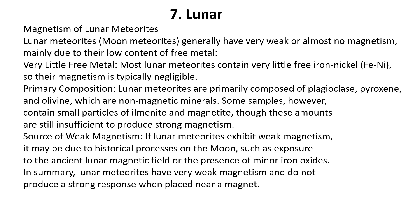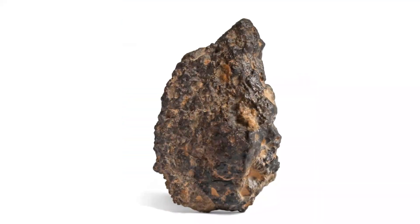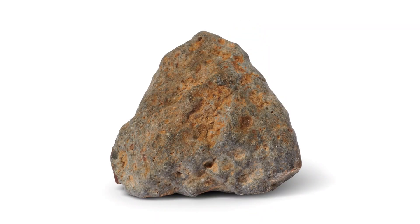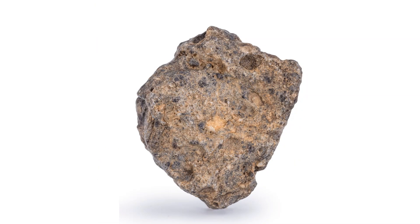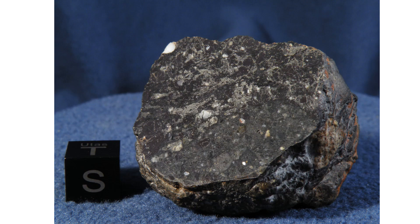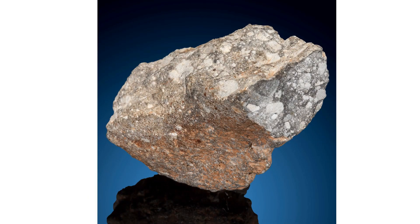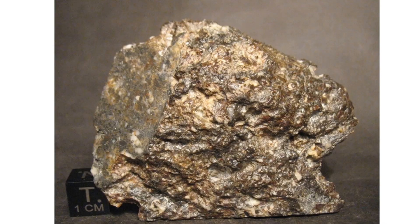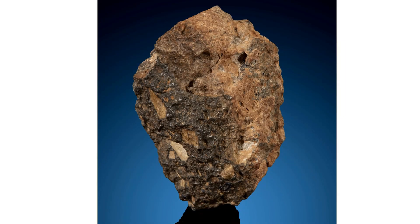Magnetism of Lunar meteorites: Lunar meteorites (moon meteorites) generally have very weak or almost no magnetism, mainly due to their low content of free metal. Very little free metal: Most lunar meteorites contain very little free iron-nickel, so their magnetism is typically negligible. Primary composition: Lunar meteorites are primarily composed of plagioclase, pyroxene, and olivine, which are non-magnetic minerals. Some samples, however, contain small particles of ilmenite and magnetite, though these amounts are still insufficient to produce strong magnetism. If lunar meteorites exhibit weak magnetism, it may be due to historical processes on the Moon, such as exposure to the ancient lunar magnetic field or the presence of minor iron oxides. In summary, lunar meteorites have very weak magnetism and do not produce a strong response when placed near a magnet.